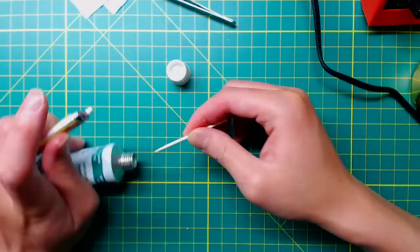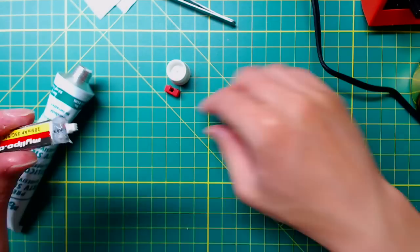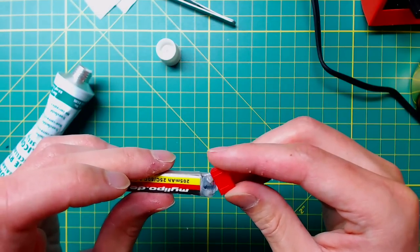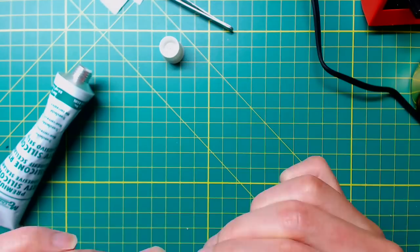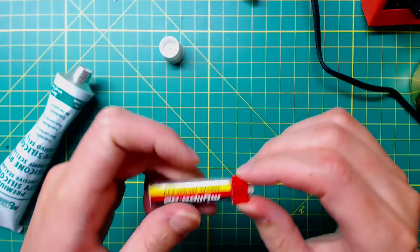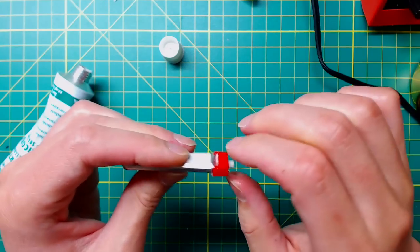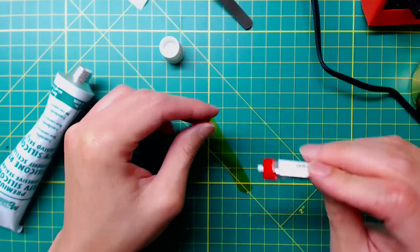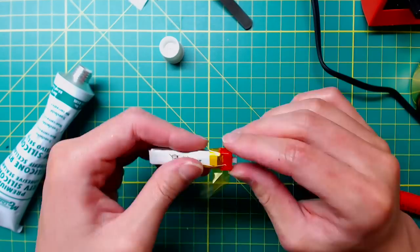Finally, align the red housing with the connector in the battery and put it back very carefully. I also use some tape to hold everything in place before the rubber is fully cured.